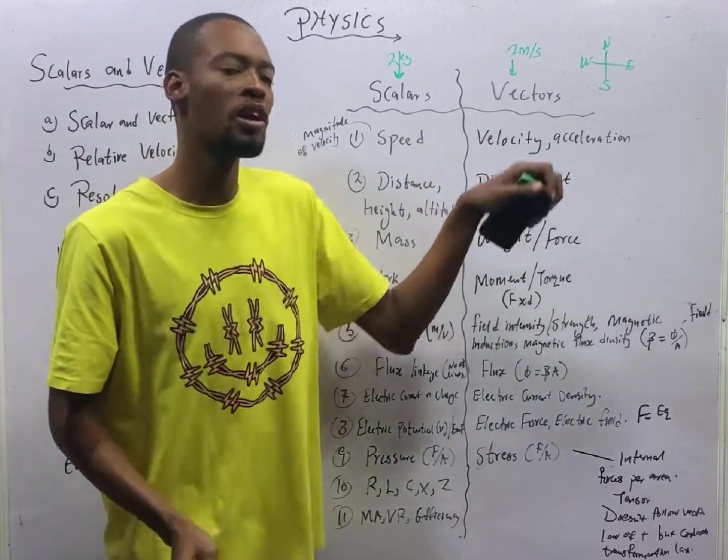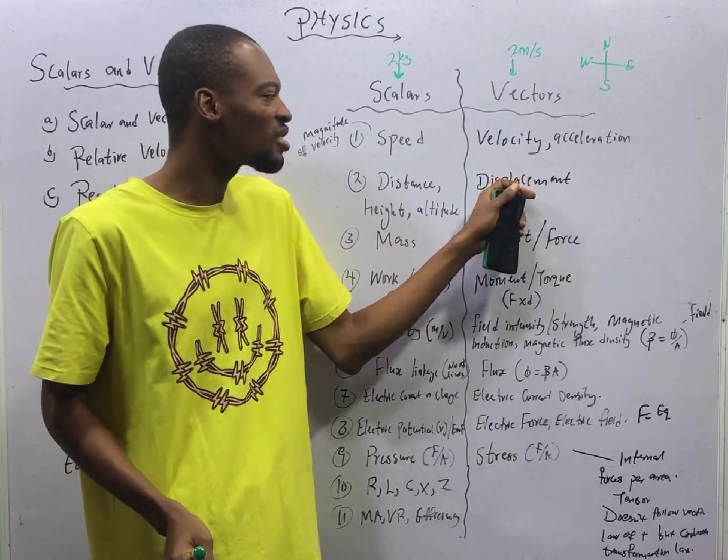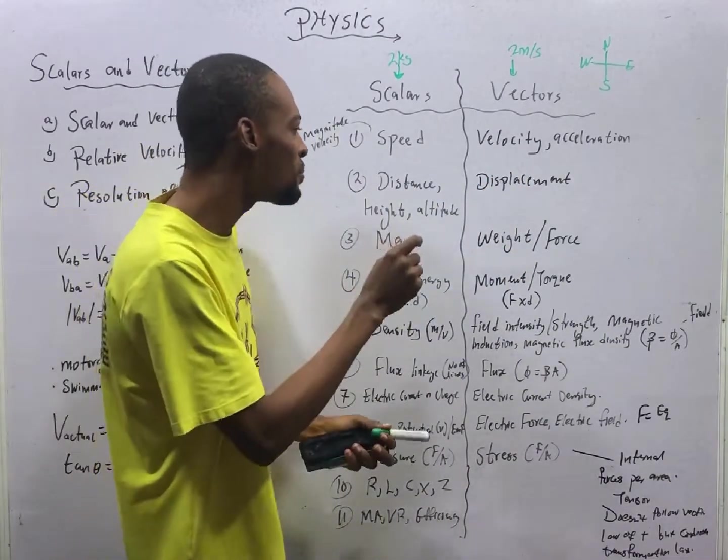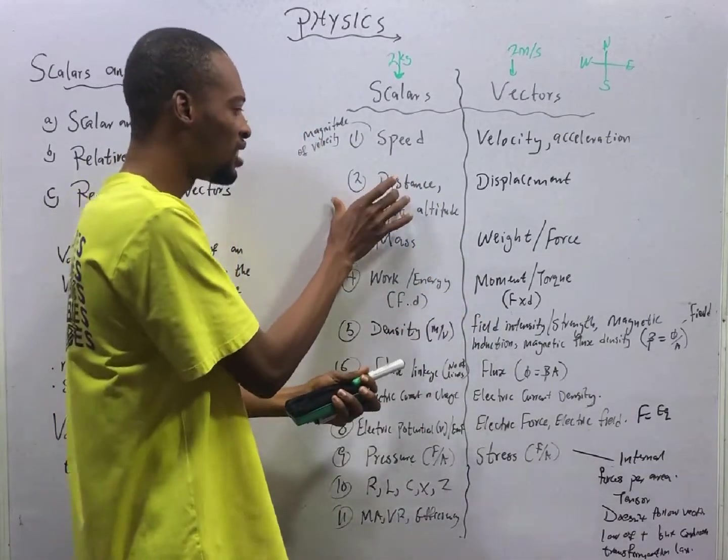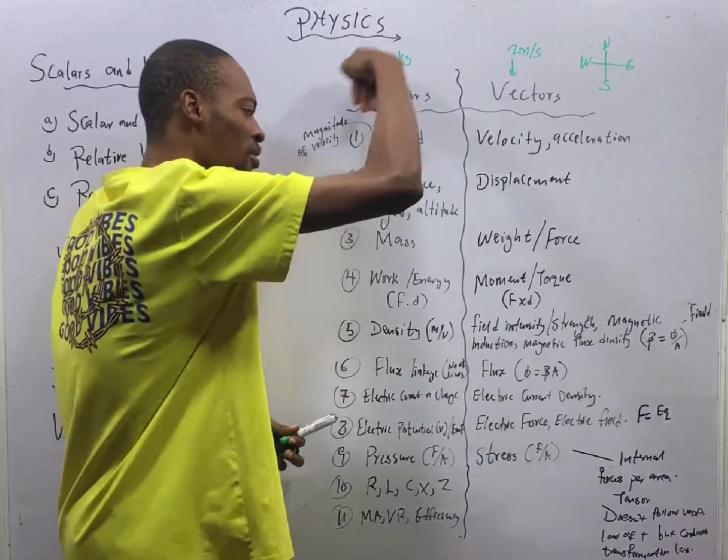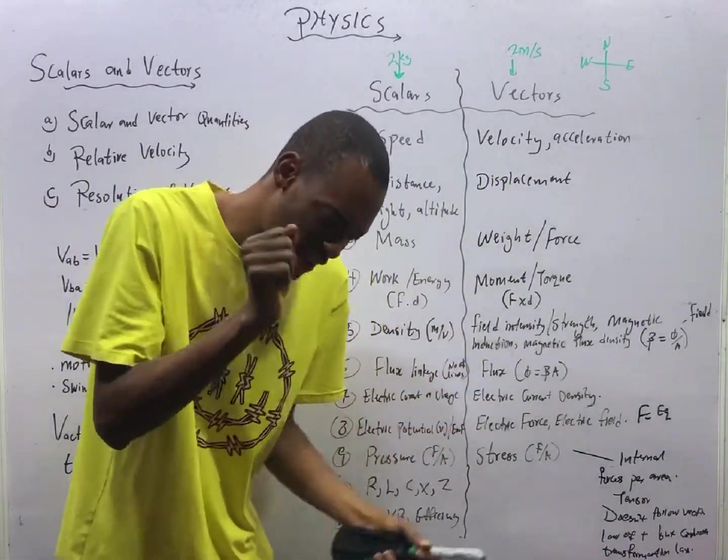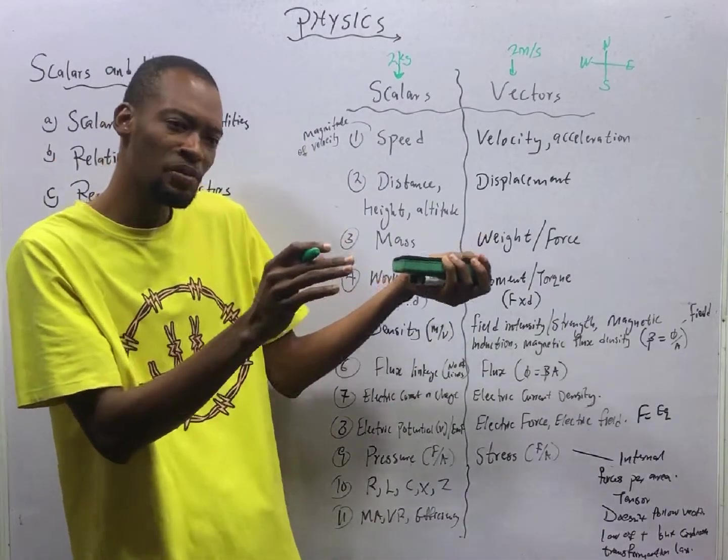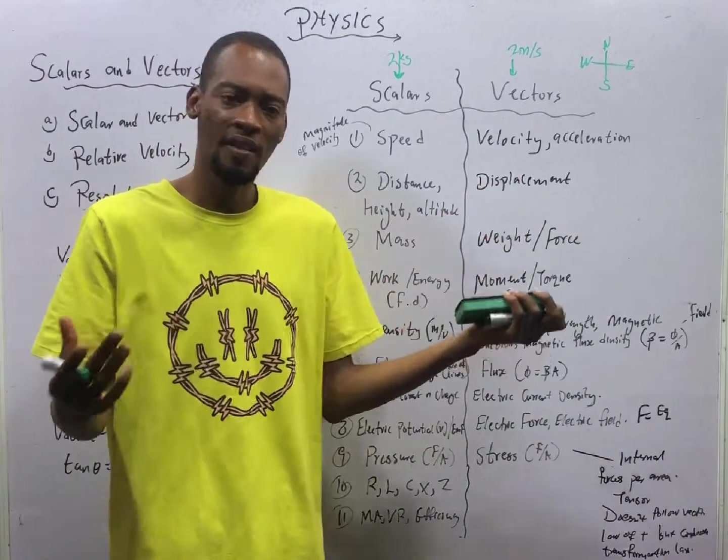Meanwhile, displacement is the big boy or vector version of distance. It is the distance covered in a specified direction. Displacement is a distance covered in a specified direction. Distance is the ground covered by an object, total ground. But this displacement is distance in a specified direction. So you need to tell us the direction, the distance is moving. The distance is in this direction. So displacement requires direction.